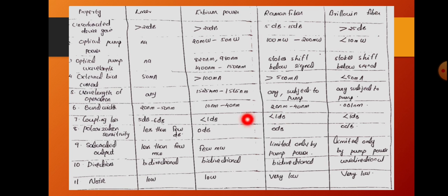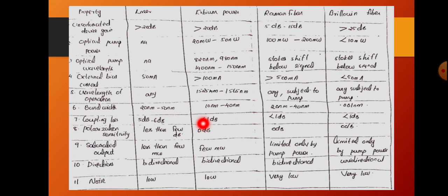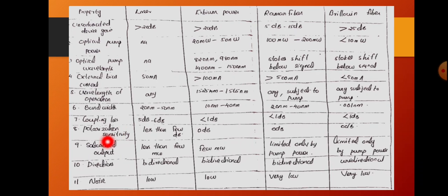Regarding coupling losses, when coupling the laser with the fiber the coupling loss is 5 dB to 6 dB. When coupling erbium fiber with the original silica fiber, the coupling loss is 1 dB. For Raman fiber and Brillouin fiber, the coupling loss is the same — less than 1 dB. These are typical values.